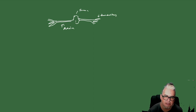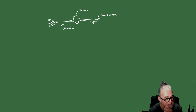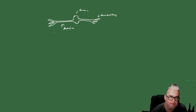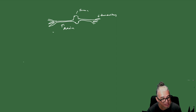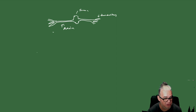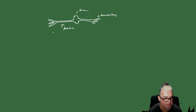La parte interesante de las neuronas es que exhiben cierta actividad como de impulsos eléctricos. No es que esté dando una corriente a lo largo del axón — se va a modelar como si fuera un circuito, pero no es un circuito como tal, porque no hay una corriente eléctrica a lo largo de la membrana celular.